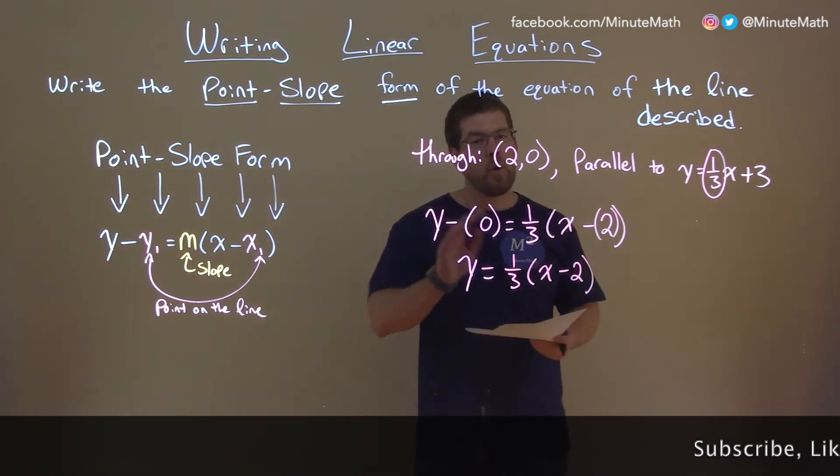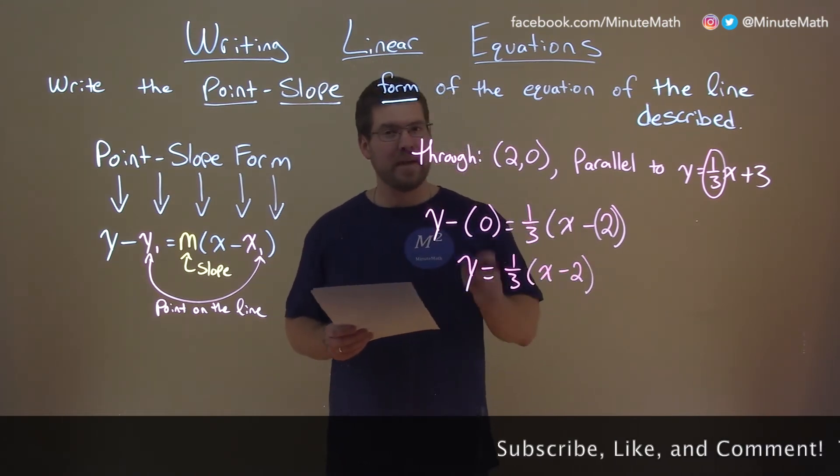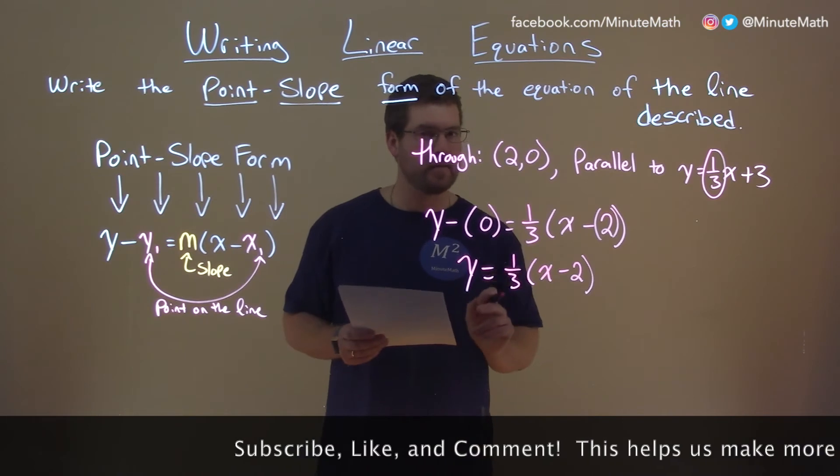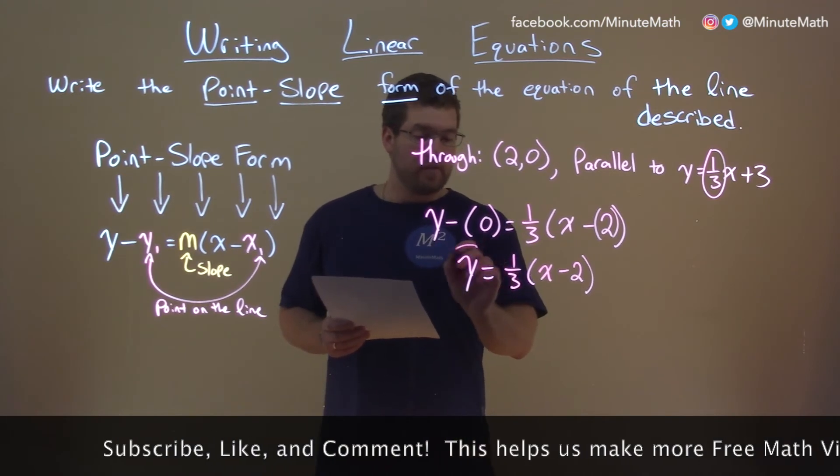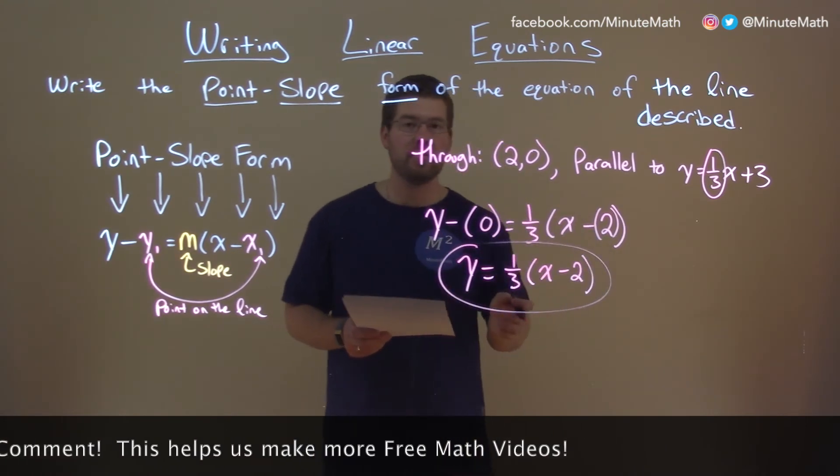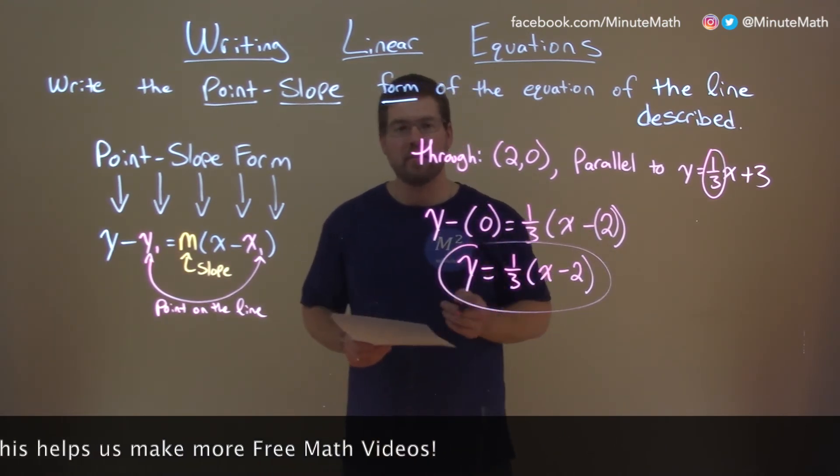And again, this almost looks like it's in slope-intercept form, but it's not. It's still in point-slope form. Notice this part here. It's not exactly the same. So our answer in point-slope form is just y equals 1/3 times x minus 2, and that's it. It's in point-slope form.